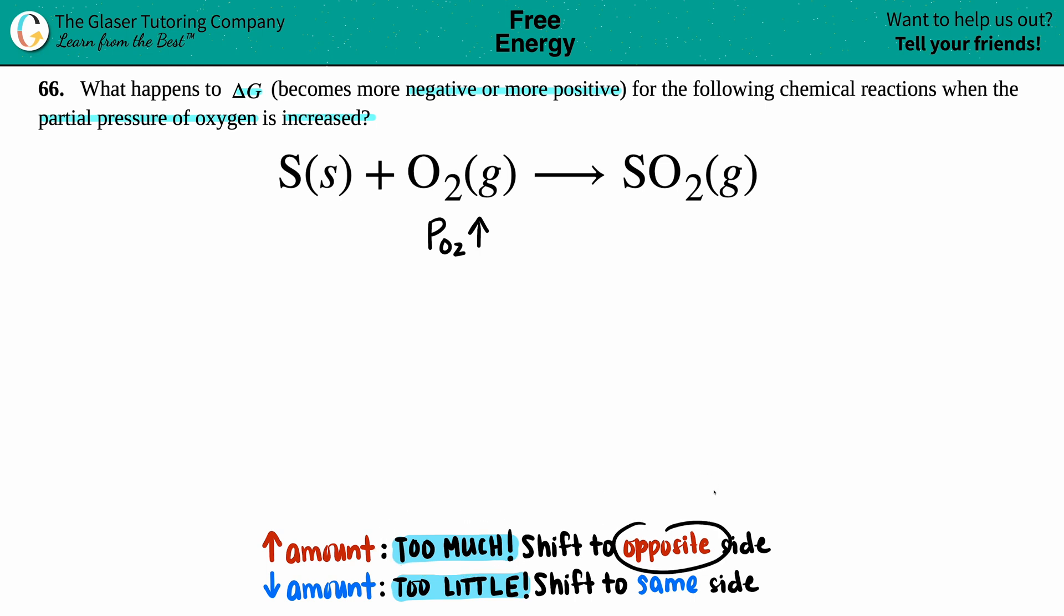So whenever you increase the amount of your oxygen, in this case you have too much, so you will always shift in the opposite direction or shift to the opposite side. So if you're increasing on your reactant side, you go to the other side. Kind of makes sense: you have more of this, so you can make more product. So my shift is going to be more to the product side.